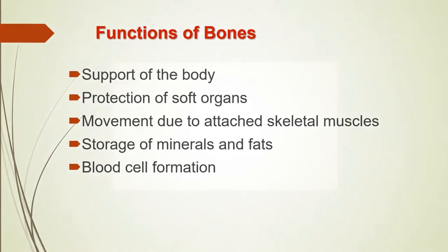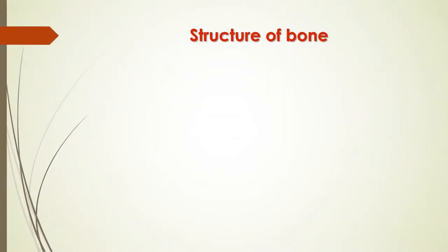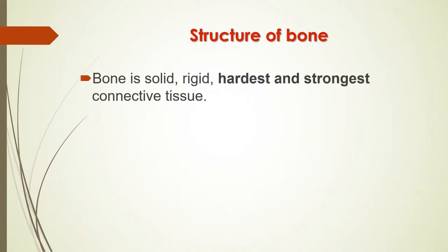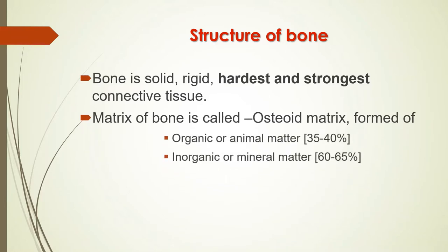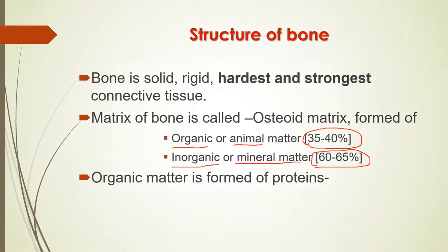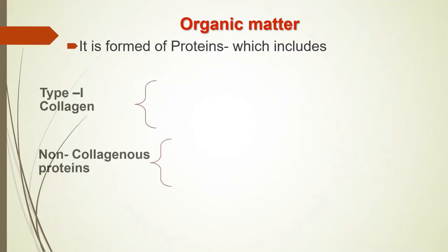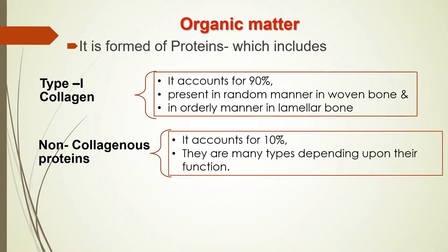Now let us see what is the structure of bone. Bone is a solid, rigid, hardest and strongest connective tissue. The matrix of the bone is called osteoid matrix and it is formed of two types of matter: one is organic or animal matter and the other is inorganic or mineral matter. Organic matter constitutes 35 to 40 percent of the total, while inorganic matter forms about 60 to 65 percent of the bone. Organic matter is formed of proteins of the matrix, including type 1 collagen and non-collagenous proteins, secreted by osteoblasts. Type 1 collagen forms the backbone of the matrix and accounts for about 90 percent of the proteins.